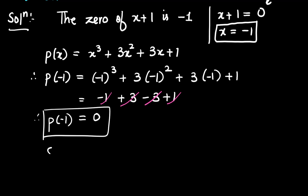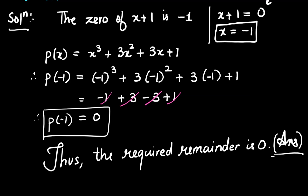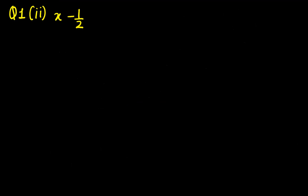Therefore, the required remainder is zero. That is the answer. Let us solve the next question.